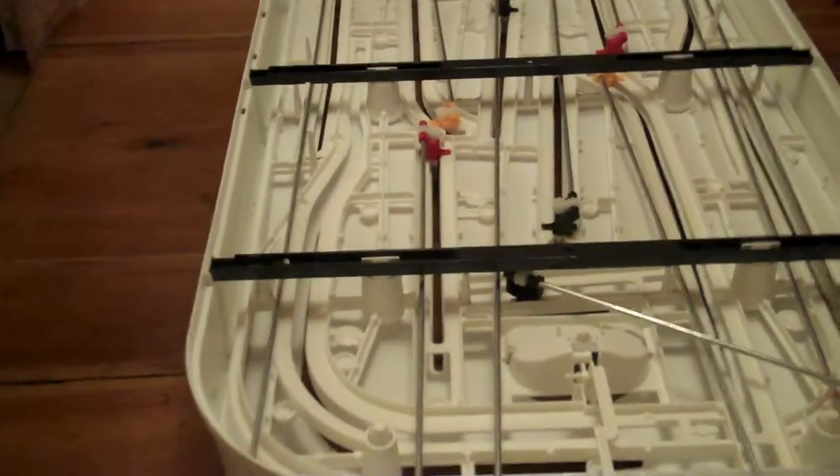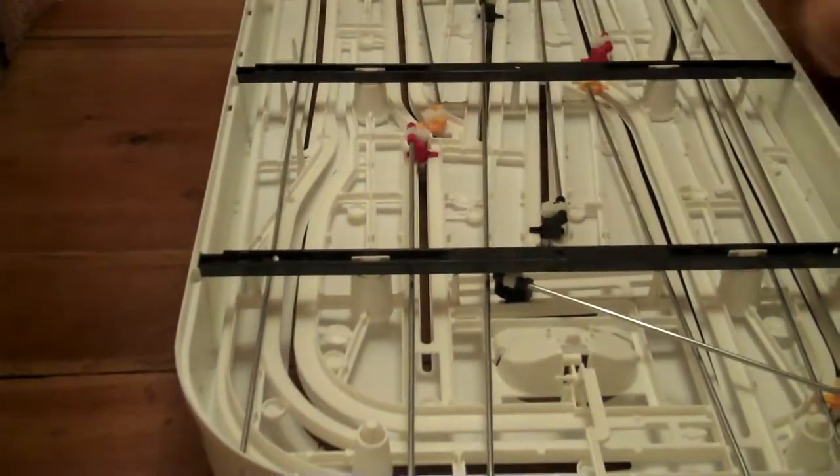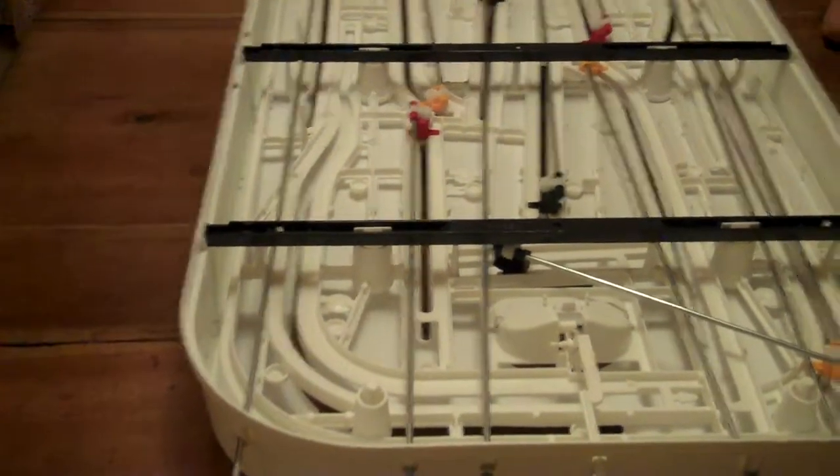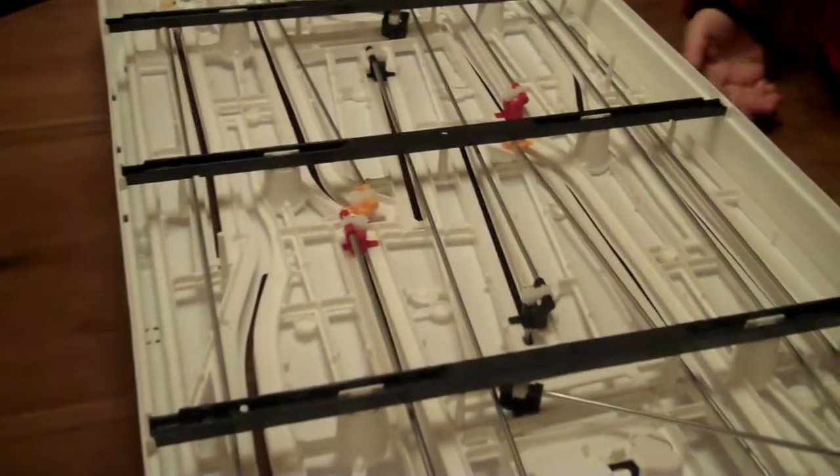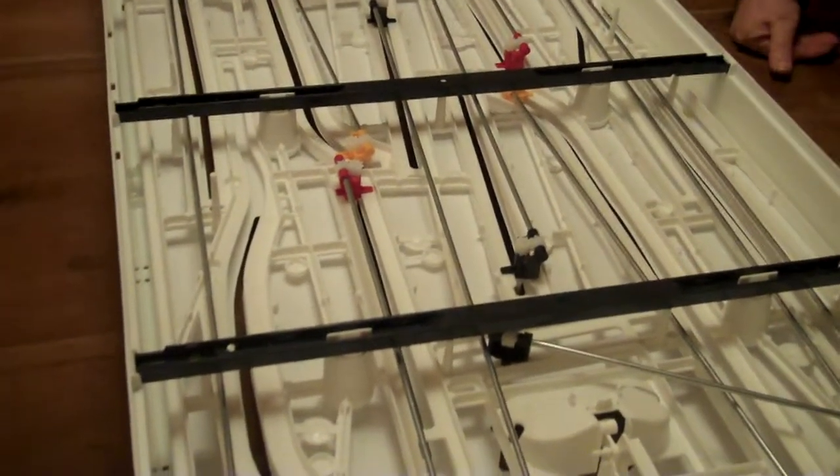Today we're going to show you how to change the right defenseman for the Stiga Table Hockey Game. You want to have your game turned upside down on a flat surface. This is the easiest way to do it and you won't damage your game by doing it this way.